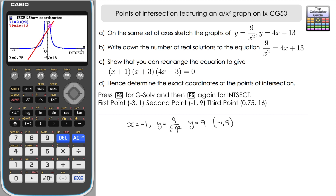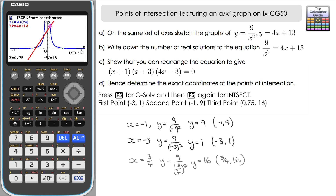For x plus 3 equals 0, x equals minus 3. Then y equals 9 over (minus 3) squared: minus 3 squared is 9, so 9 over 9 gives y equals 1. The second coordinate is (minus 3, 1), as we already knew from the CG50. Finally, 4x minus 3 equals 0 gives x equals three quarters. Then y equals 9 over (three quarters) squared — three quarters squared is 9 over 16, and 9 divided by 9/16 gives 16. You can use the Run mode on the CG50 to verify that if needed.